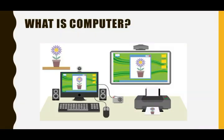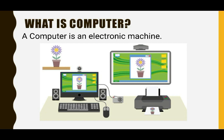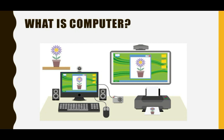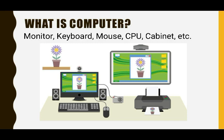Before starting the input and output devices, let me first introduce what is a computer. A computer is an electronic machine. It has different parts like monitor, keyboard, and mouse.